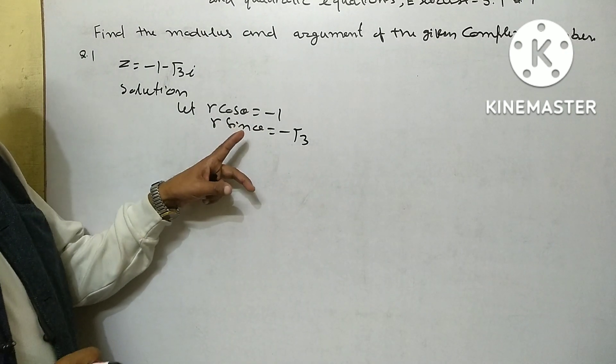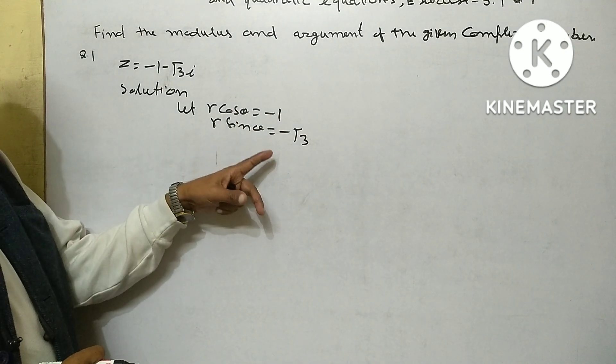Let r cos theta equal minus 1. r sin theta equal minus root 3i.